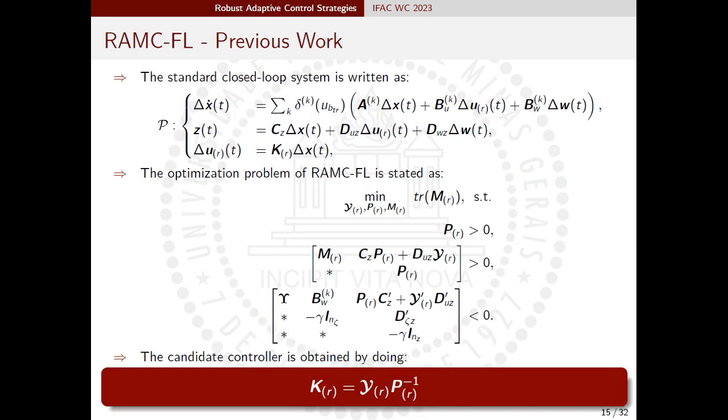The closed-loop system dynamics in each subset is augmented to include the total effects generated by unmodeled dynamics and parametric uncertainties represented in vector W. Besides, K is the feedback gain, and Z is the cost variable weighted by the tuning matrices and selected according to the control objectives.